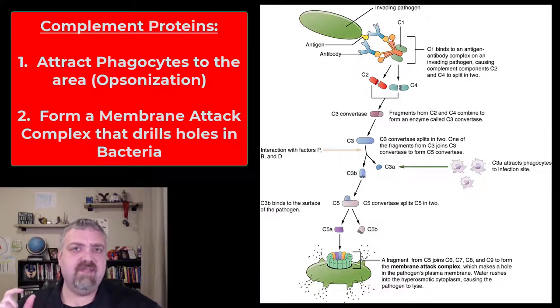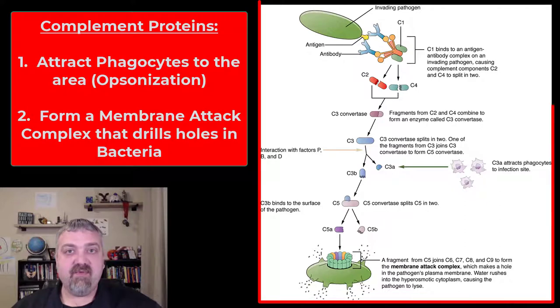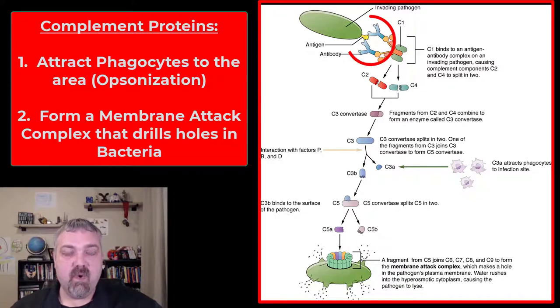But I won't ask you to know the difference. We have the alternate pathway, which does not require an antibody, which means it's a part of your innate immune response. The classical pathway that you see here does require an antibody. It's part of your adaptive specific immune system.